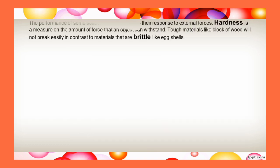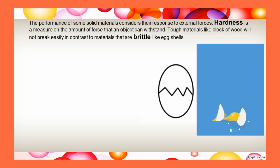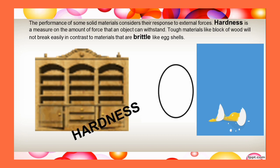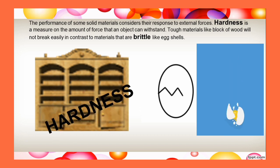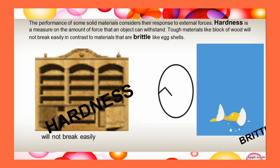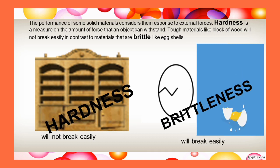The performance of some solid materials considers their response to external forces. Hardness is a measure of the amount of force that an object can withstand. Tough materials like a block of wood will not break easily, in contrast to materials that are brittle like eggshells. Brittleness means they will break easily.